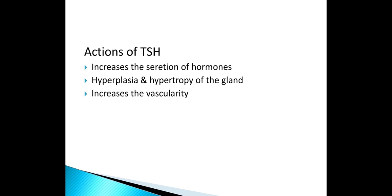TSH increases the size and number of acinar cells. It increases the activity of the iodide pump, enhancing iodide trapping. It increases the iodination of tyrosine and coupling to form thyroid hormones. It increases proteolysis of thyroglobulin, releasing thyroid hormones into the blood. The effect of TSH is brought about by activation of the second messenger cyclic AMP, increasing secretion, and causing hyperplasia and hypertrophy of the gland and increasing vascularity.